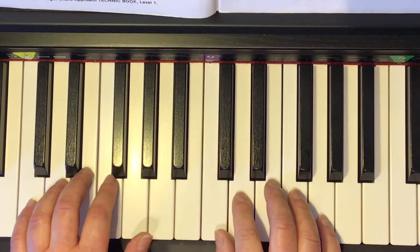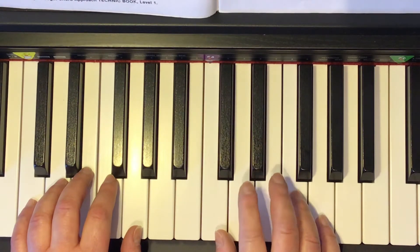The left hand begins with the thumb on the G key. Then on the second line, the right hand begins with the third finger on the E key.